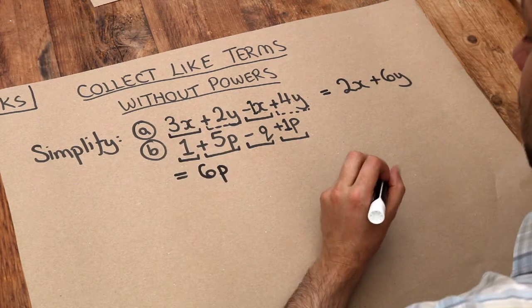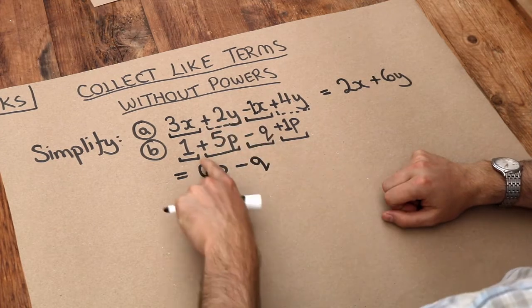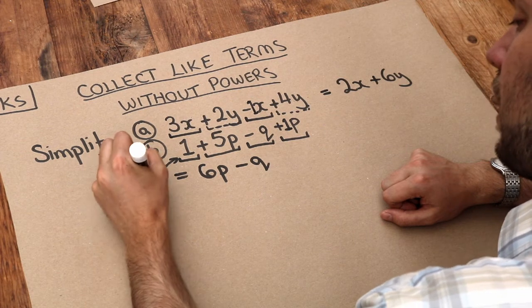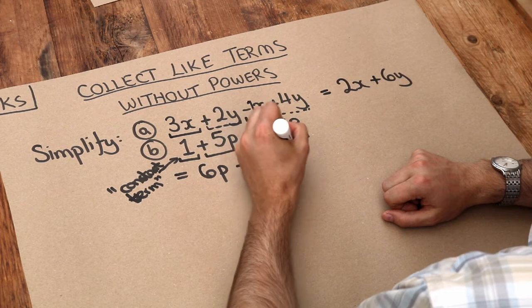What about the q terms? Well we've only got the single q term here so we just put the minus q here. And similarly this is known as the constant term because it doesn't involve any variables at all, and there's only one constant term here so that's just going to stay on its own.